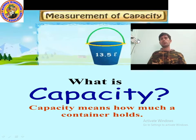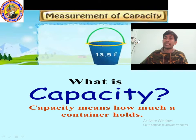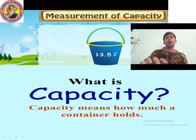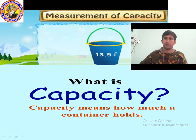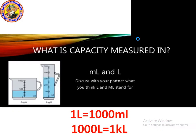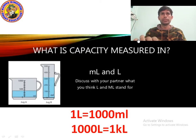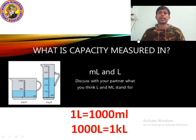What is capacity measured in? Capacity is measured in milliliter or liter. The short form for milliliter is mL, and for liter is L. Remember: liter is the basic unit of capacity. Milliliter is the smaller unit, and kiloliter is the bigger unit. The short form for kiloliter is kL.